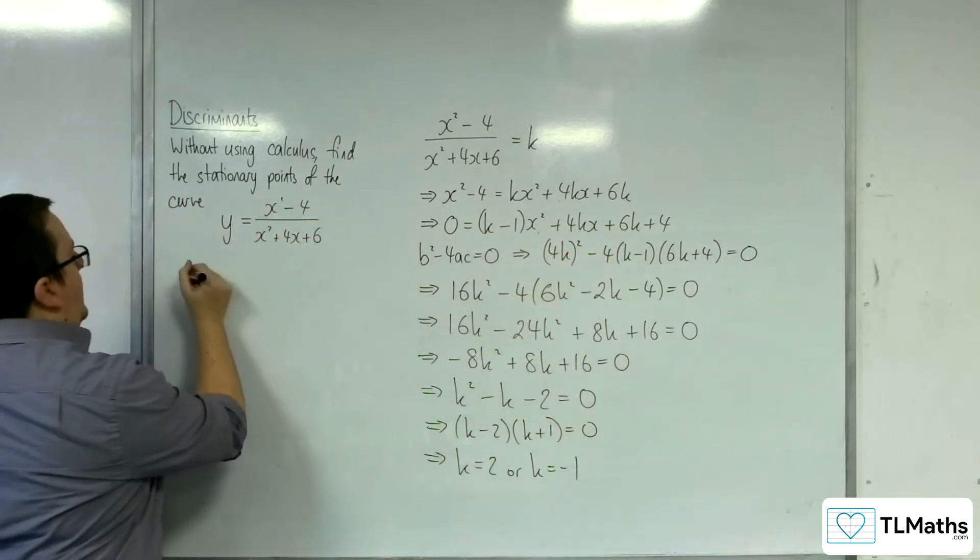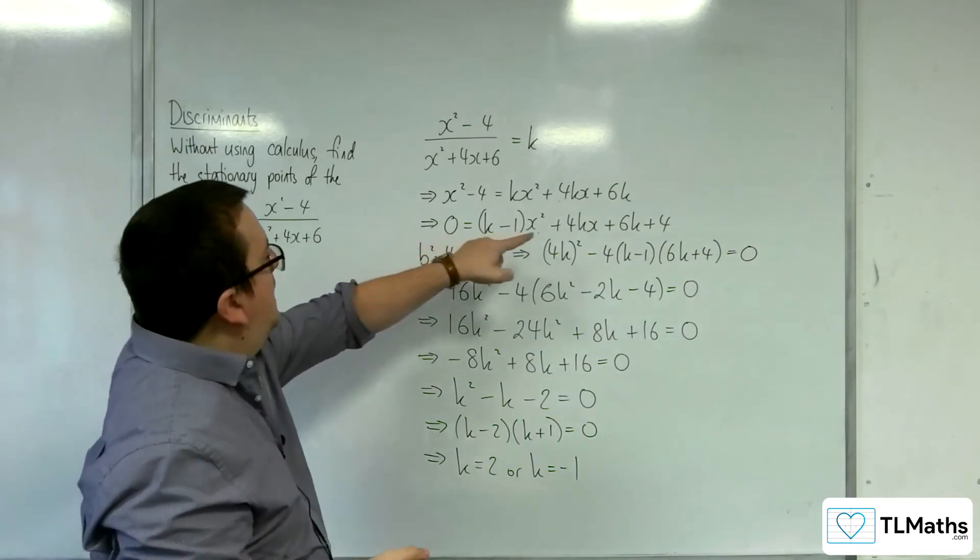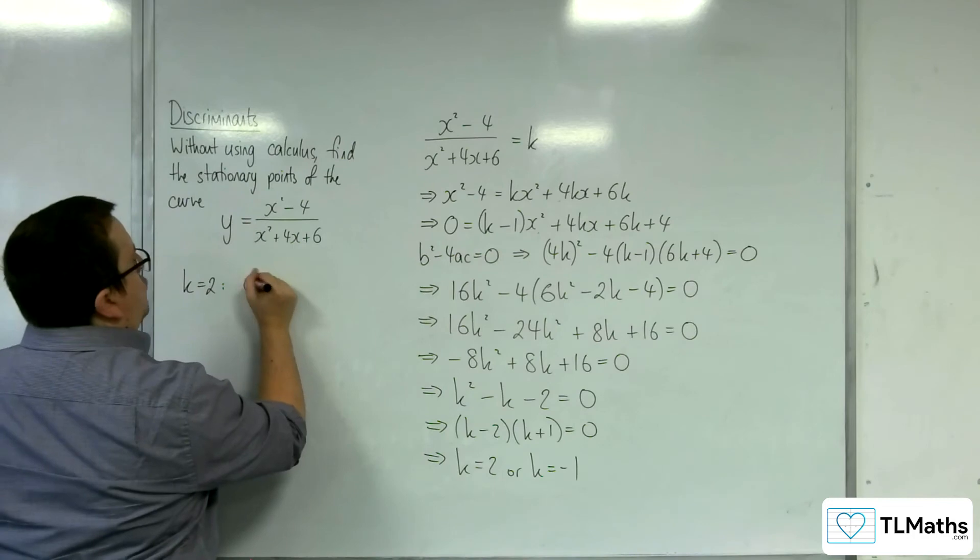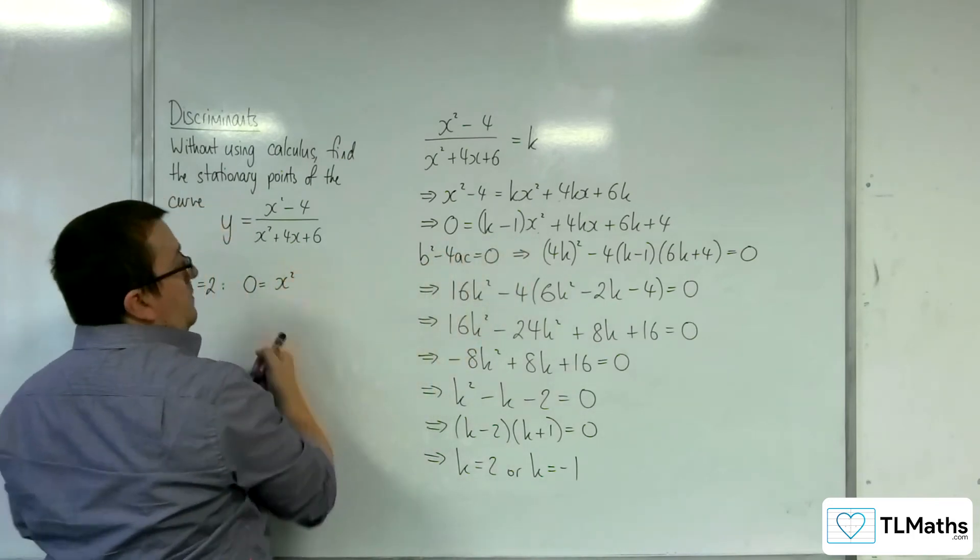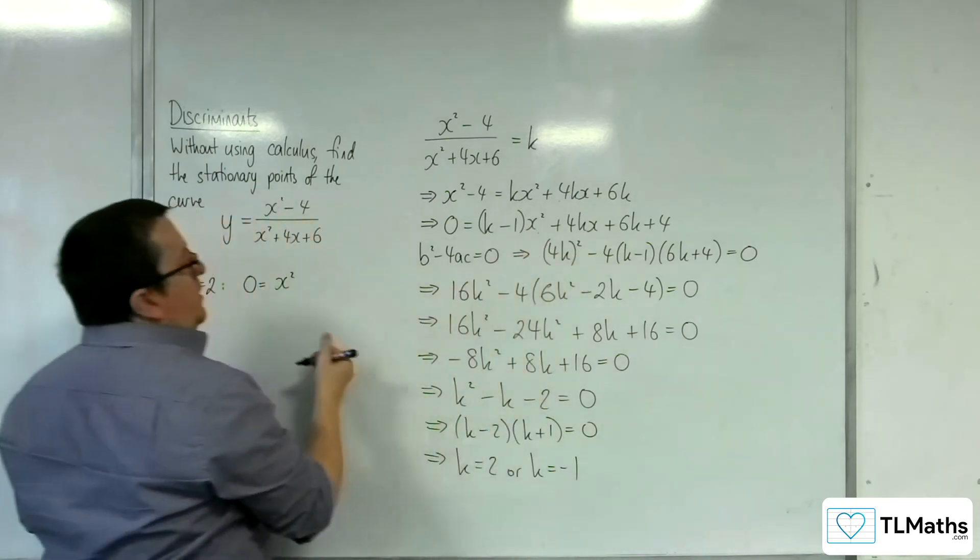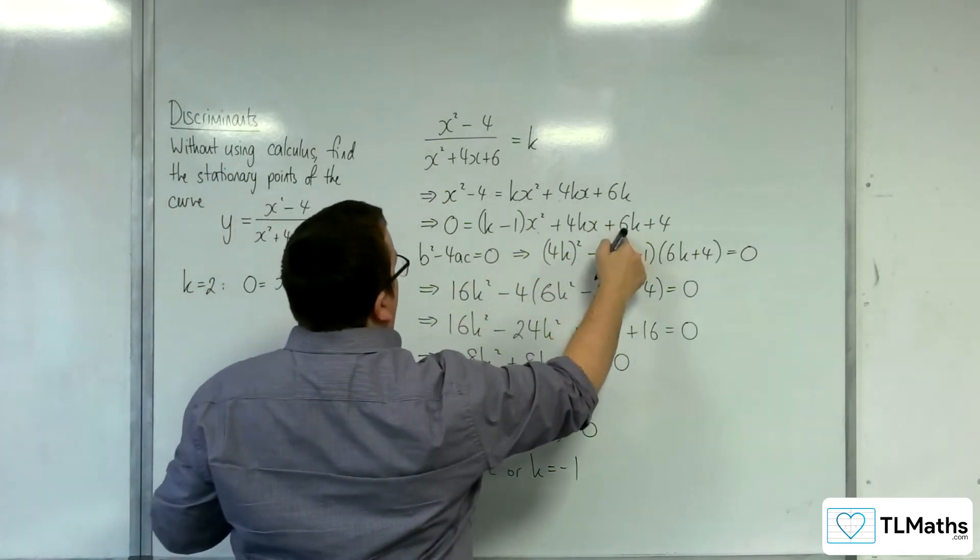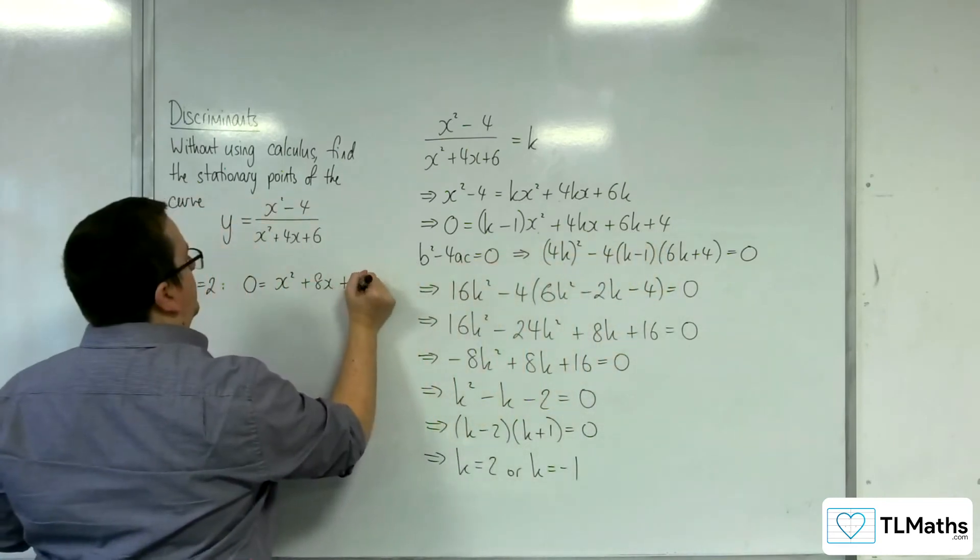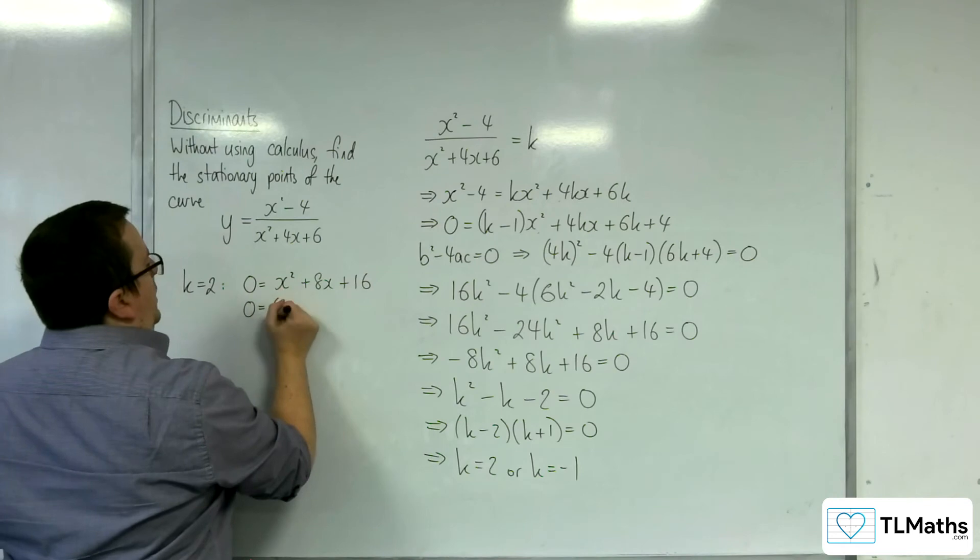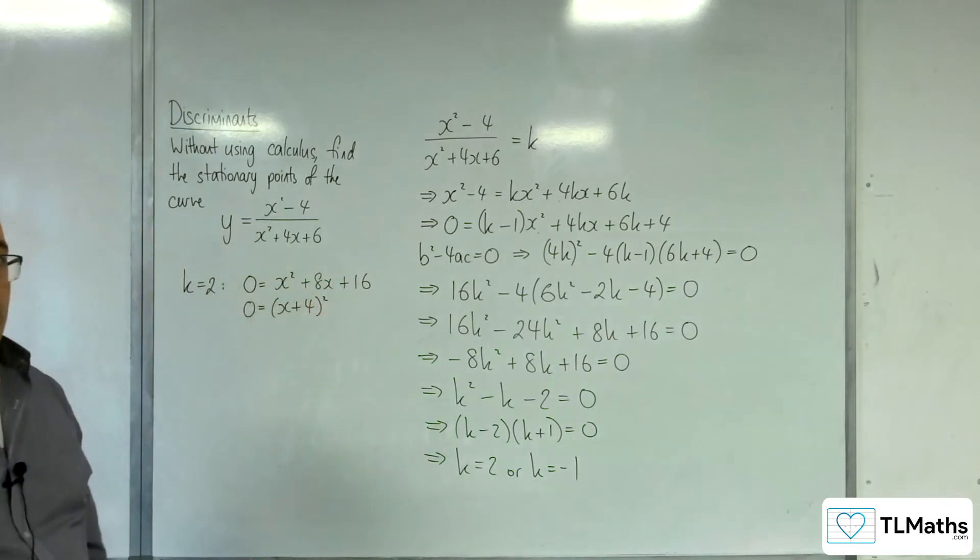So when k is equal to 2, then what we're going to get, if we substitute it in, is 0 is equal to 1x squared, just x squared, plus 8x. Then we've got 6 lots of 2, so 12 plus 4 is 16.